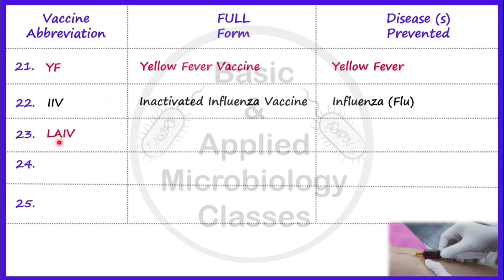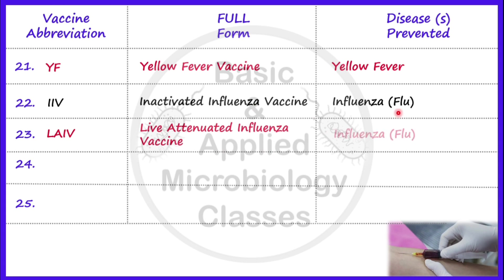Now let's take the next vaccine, that is LAIV. LAIV stands for Live Attenuated Influenza Vaccine. Again, it is for influenza. The route of administration of LAIV is different from IIV — in this case the route is intranasal.